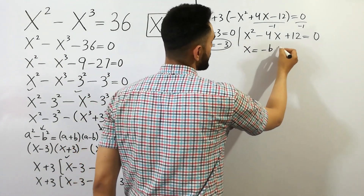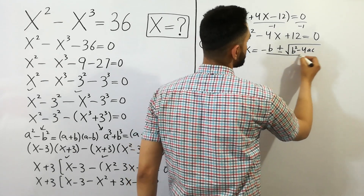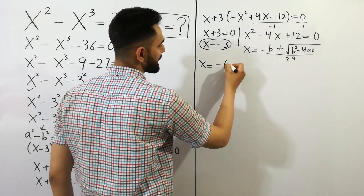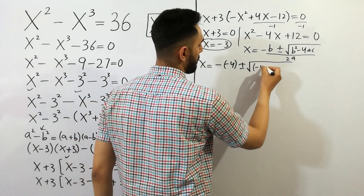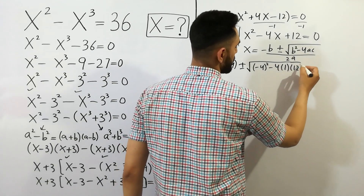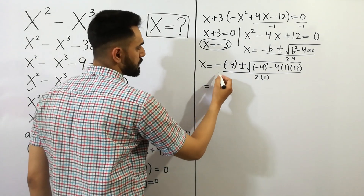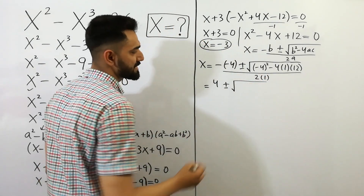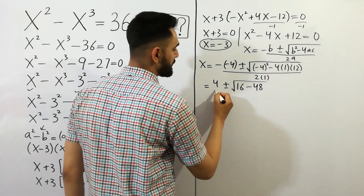Now we apply the quadratic formula: x equals minus b plus or minus square root of b squared minus 4ac, divided by 2a. Here a equals 1, b equals minus 4, and c equals 12. So we get minus minus 4, plus or minus square root of 4 squared which is 16, minus 4 times 12 which is 48, divided by 2.